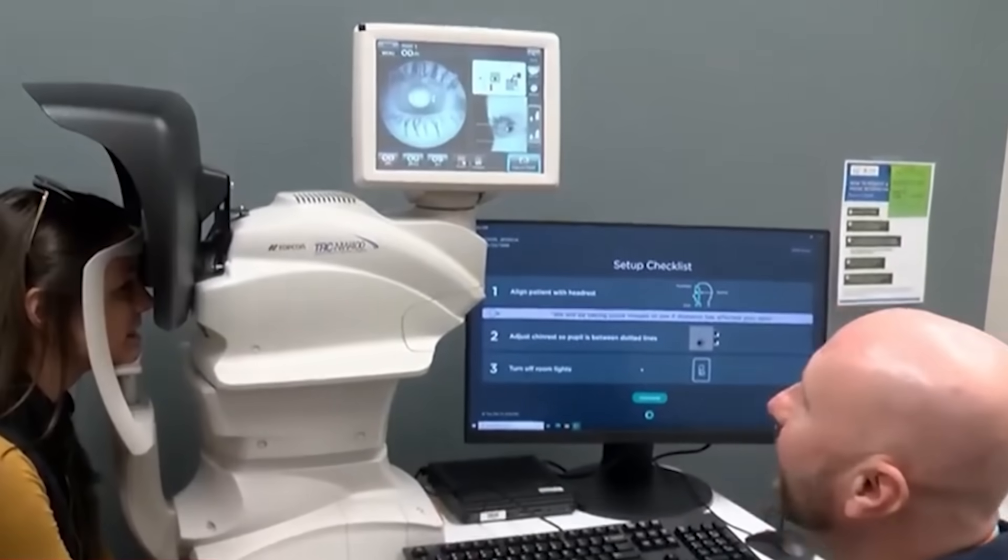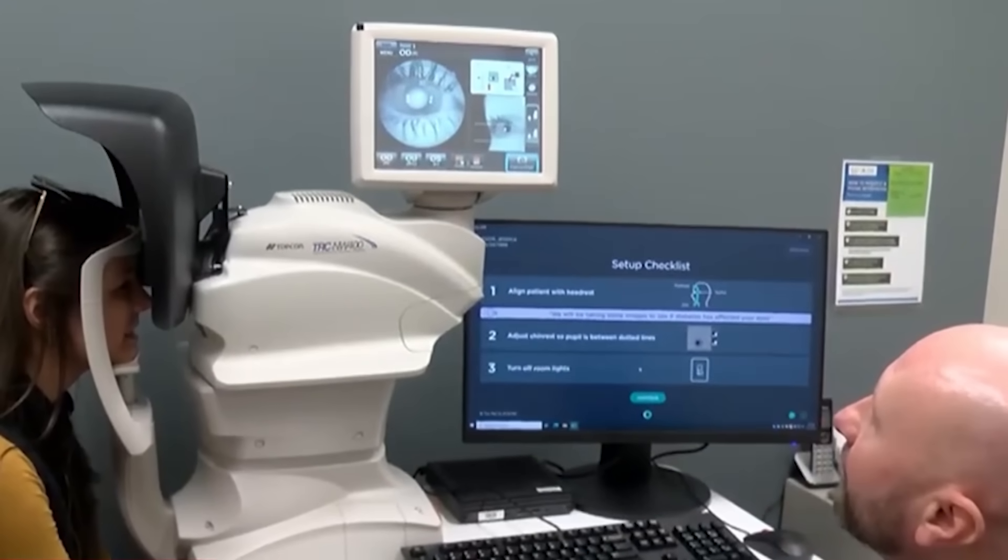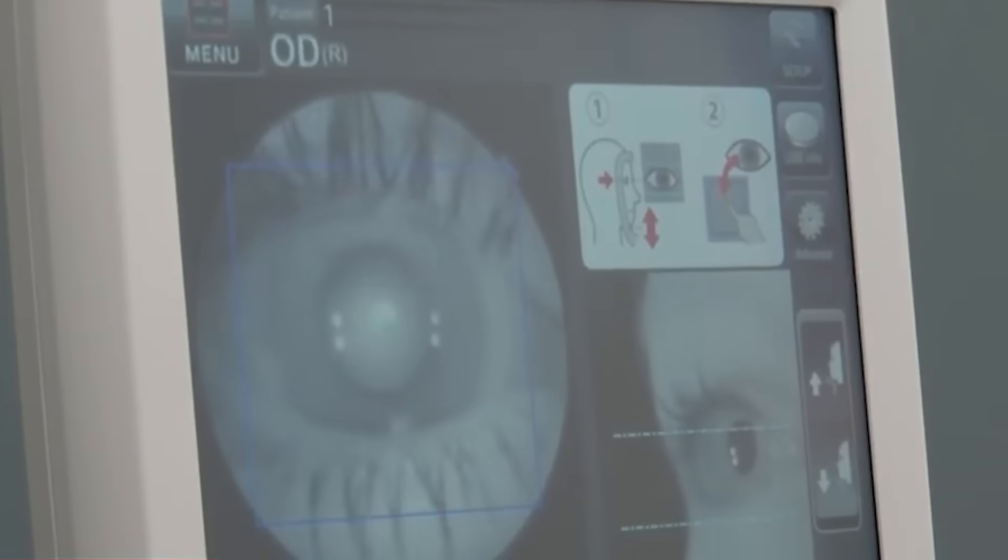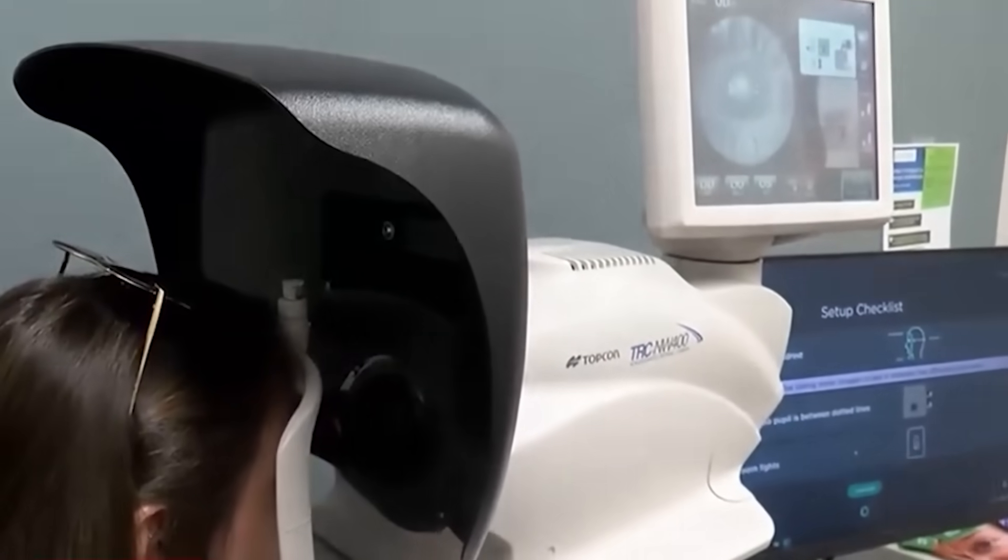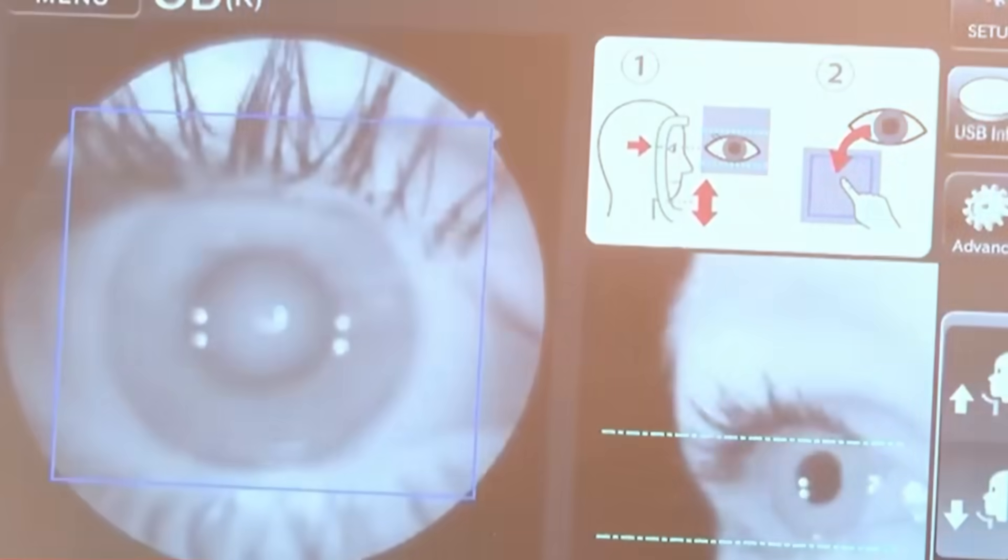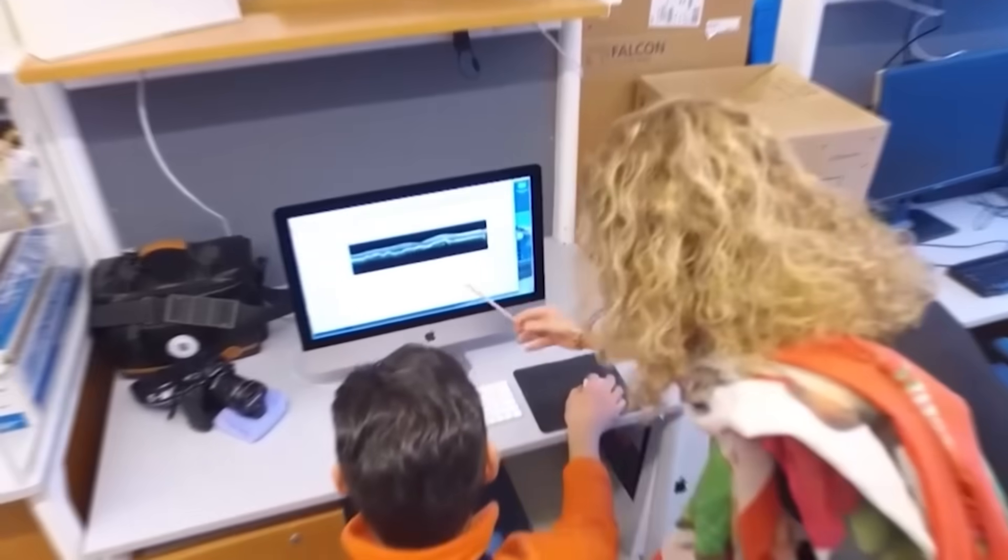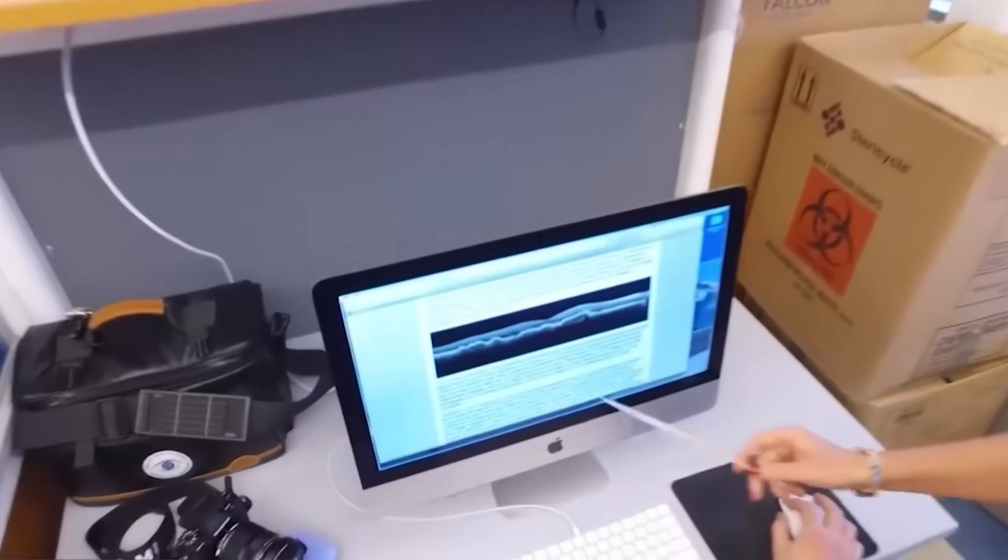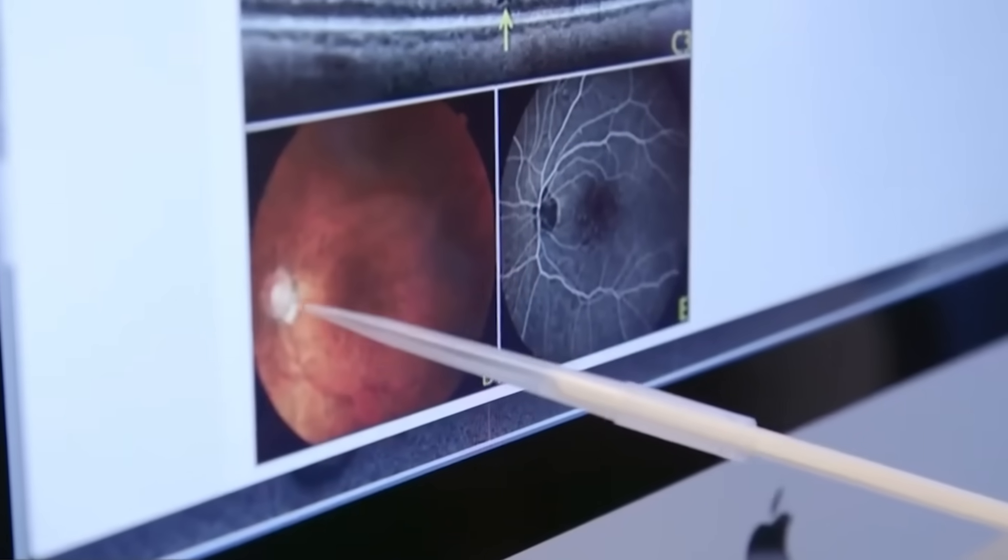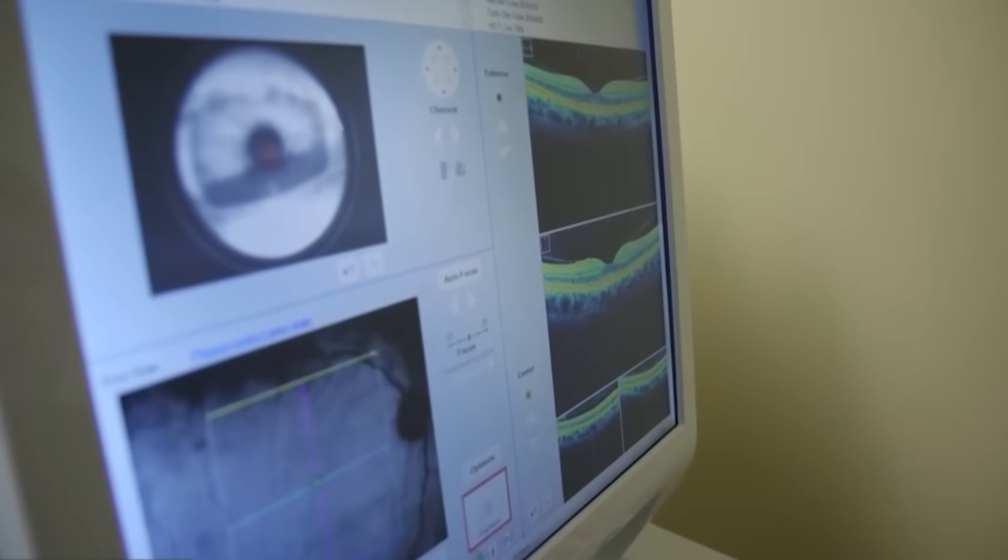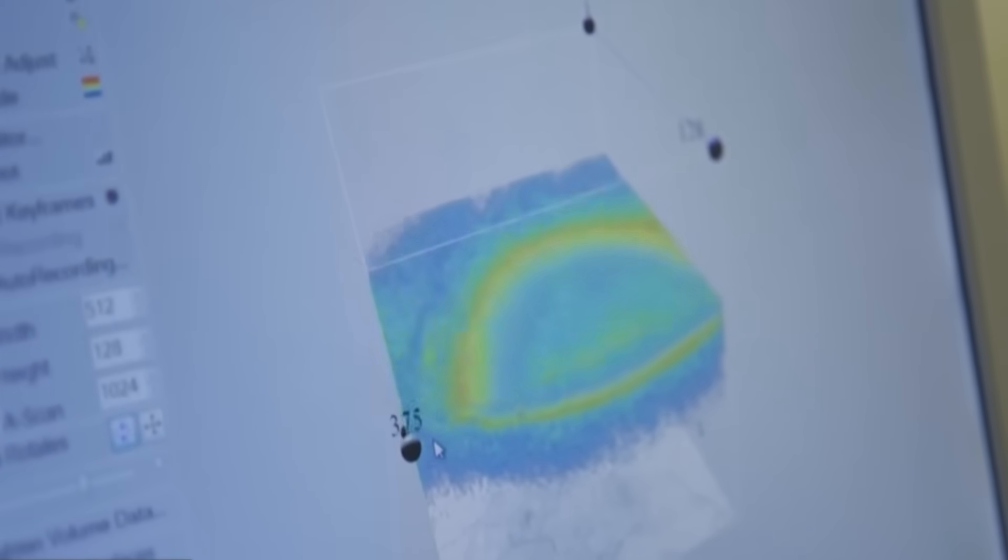These systems analyze high-resolution retinal images and detect microaneurysms long before symptoms appear. Google's Verily and other medical institutions have deployed them in hospitals across India and Thailand. Studies in the Lancet Digital Health show they perform as accurately as trained ophthalmologists. With diabetes rates rising globally, AI-based early detection is becoming an essential tool for preventing vision loss in millions of people.